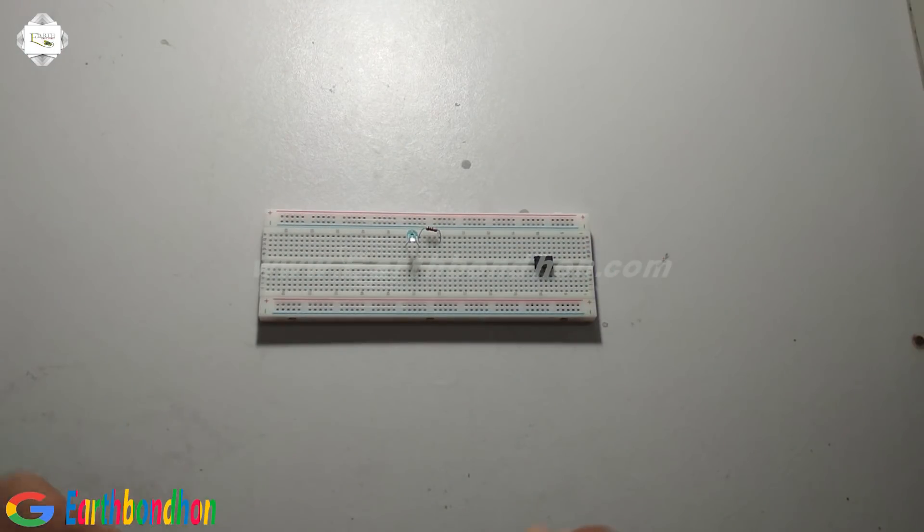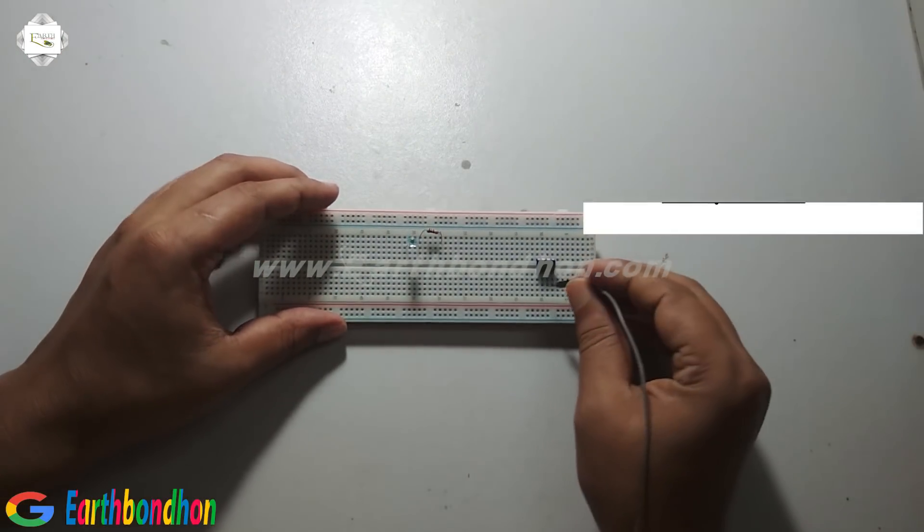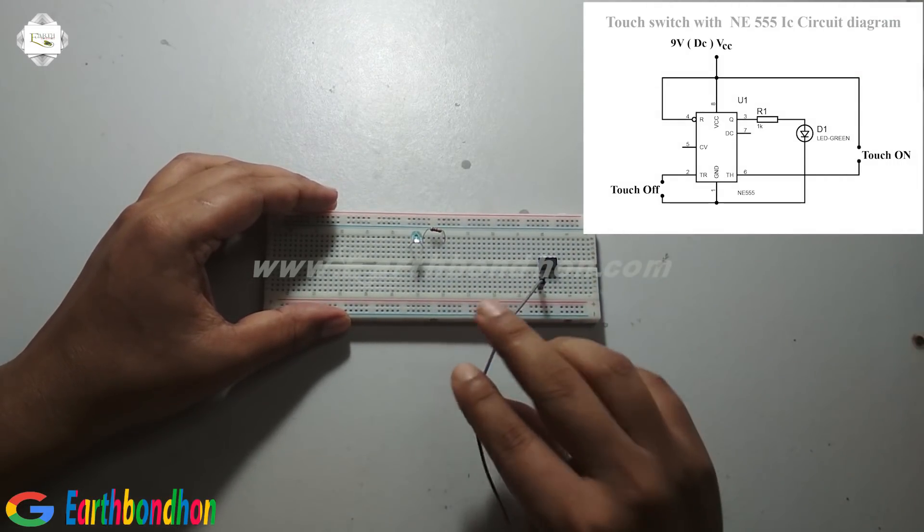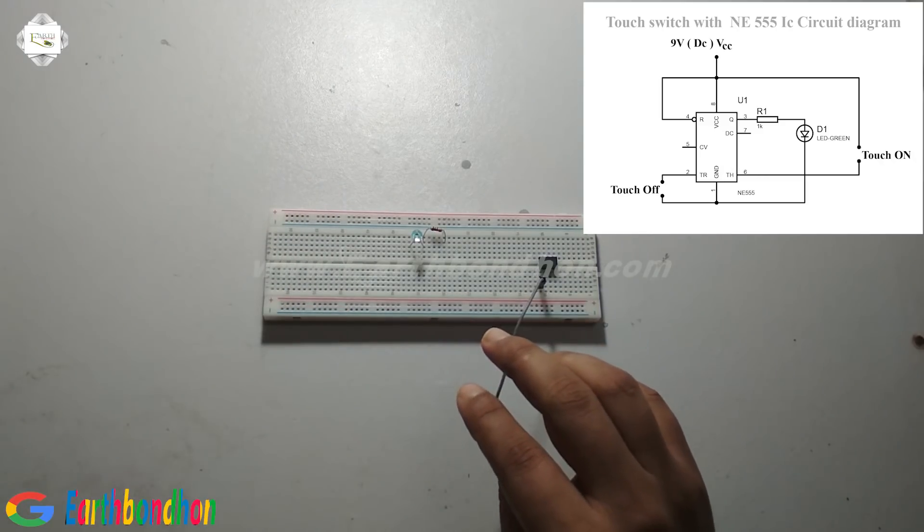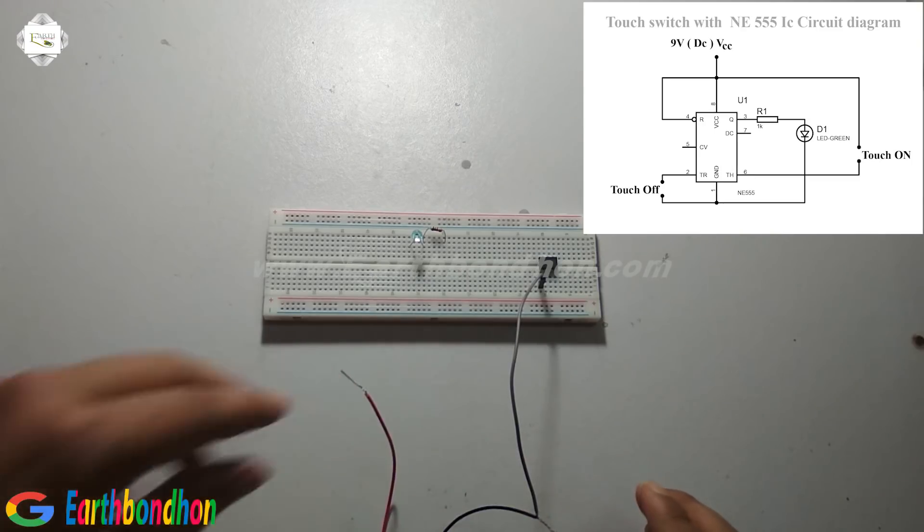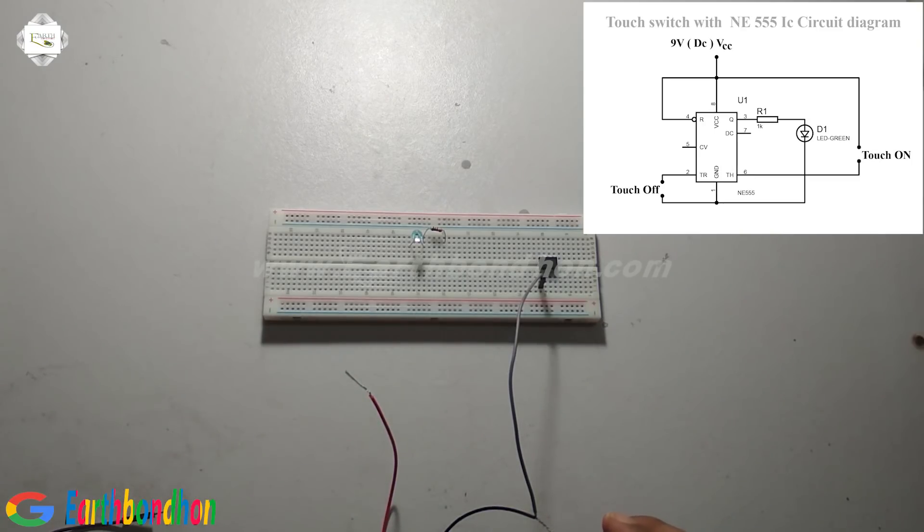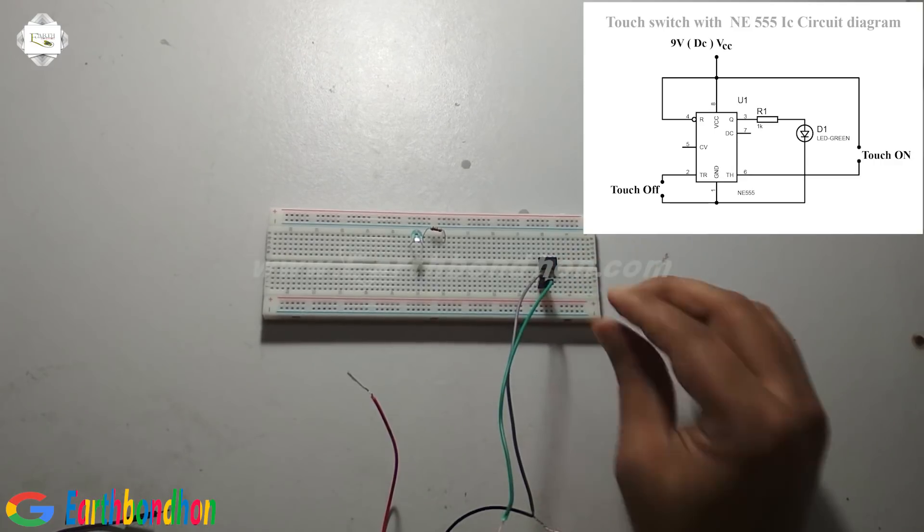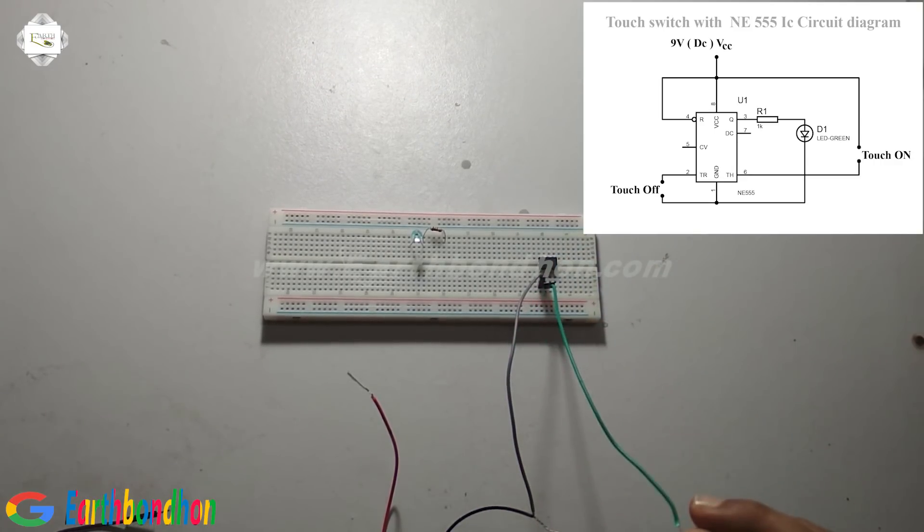Connected pin number 1 is negative supply. This is negative supply. And pin number 2 is touch 1 switch. This is pin number 2, this is the touch switch.